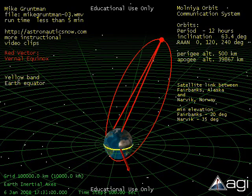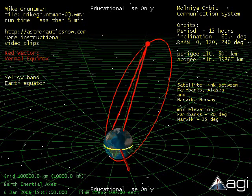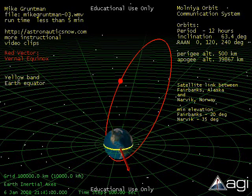In our example, the satellite provides a communication link between two points located in the north, Fairbanks in Alaska and Narvik in Norway.